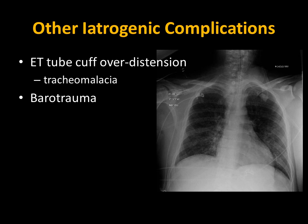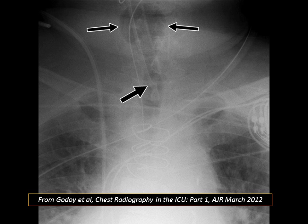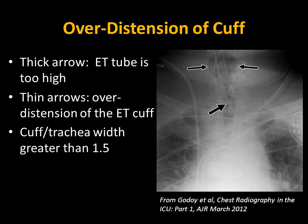There are other iatrogenic complications that can be ruled out with a chest film. An ET tube cuff that is overinflated can cause damage to the airway — this is called tracheomalacia — and you can also get barotrauma. Here's an example of ET cuff overinflation. The thin arrows point at the cuff and the thick arrow points at the ET tube tip. One rule of thumb is that if the cuff is 1.5 times the width of the trachea, the potential for airway trauma exists. In this case, you can estimate that the cuff is at least 1.5 times the width of the trachea. The ET tube also appears to be too high in the airway, and the cuff appears to be overinflated.